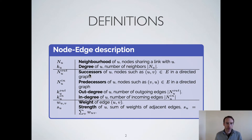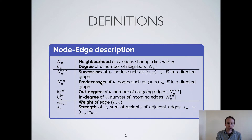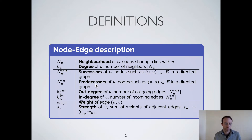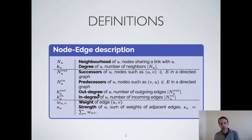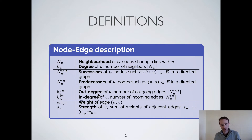We can also define the successors and the predecessors of a node in a directed network. The successors of a node are the nodes such that if there is an edge from u to v, then v is a successor of u, and the same thing for the predecessor. Similarly we can define the out-degree and the in-degree for a directed network, separating incoming and outgoing edges.